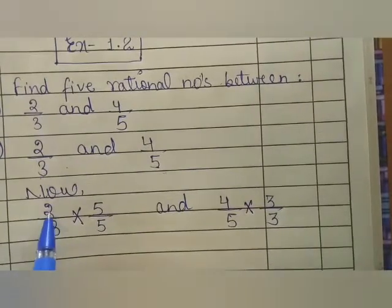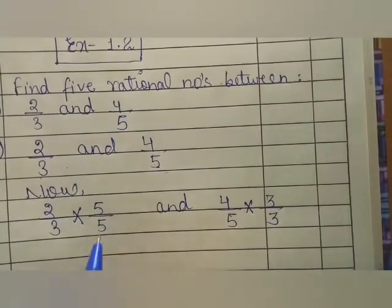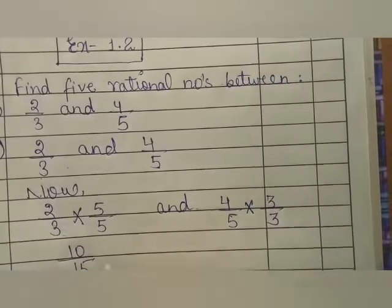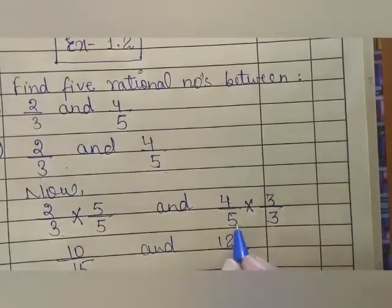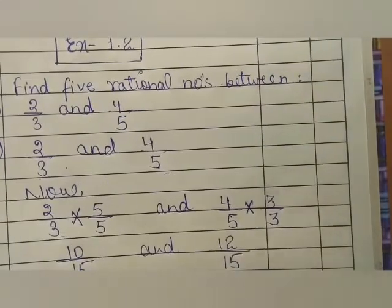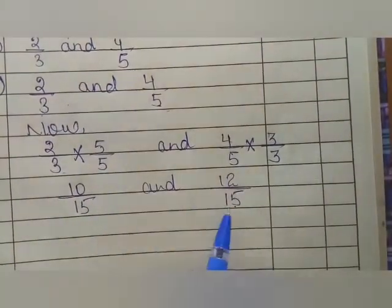Now multiply 2 to 5, 2 fives are 10, and 3 fives are 15. And 4 threes are 12 upon 5 threes are 15. As you can see, the denominator is now same.